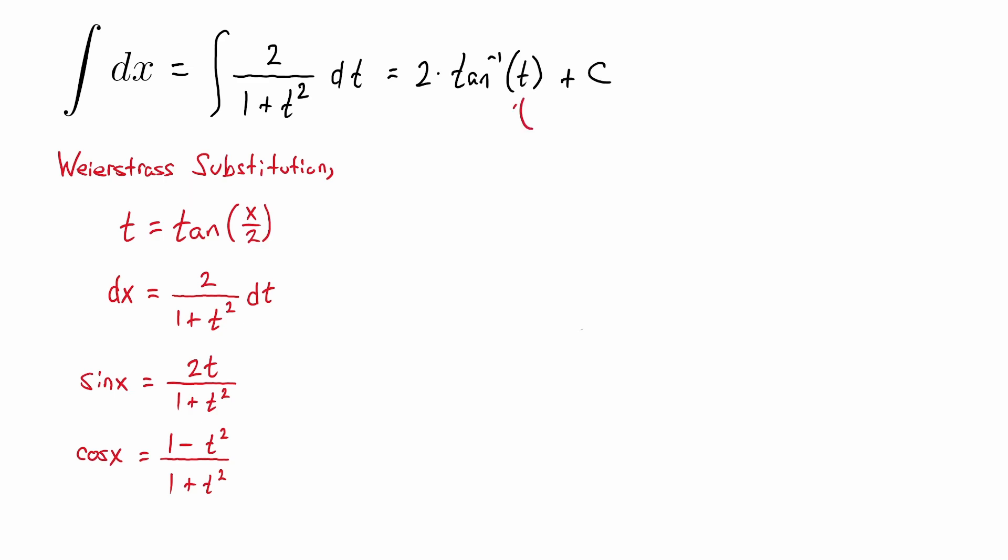At this point, we just need to back substitute t as our Weierstrass substitution, which is tangent of x over 2. So if we plug that in, we get 2 times inverse tangent of tangent of x over 2.